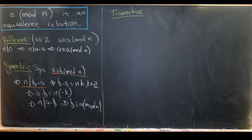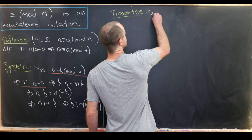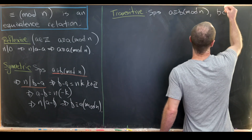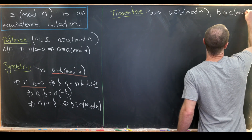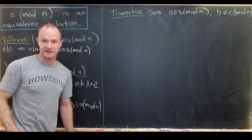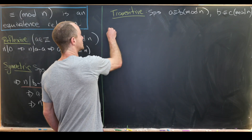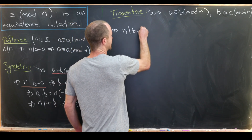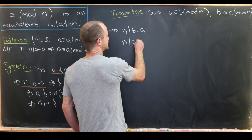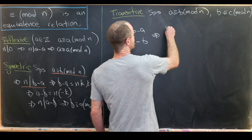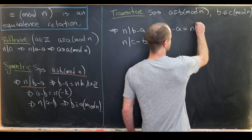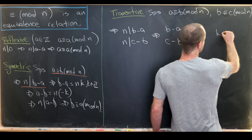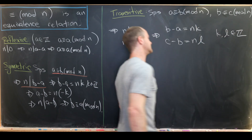Now let's move on to transitive. To prove transitivity we suppose that a is congruent to b mod n, and that b is congruent to c mod n, and we want to end with a is congruent to c mod n. Unraveling with definitions: n divides b minus a and n divides c minus b, which means b minus a equals n times k and c minus b equals n times l, where k and l are integers.